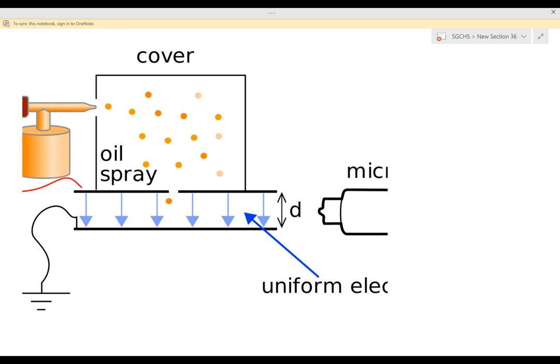So to start with, we want to remind what was happening here. What Millikan did was he sprayed oil into this container and he had a little hole here. This hole allowed the oil drops to fall through. Now they fell through into a uniform electric field.